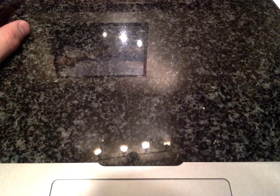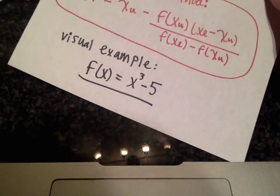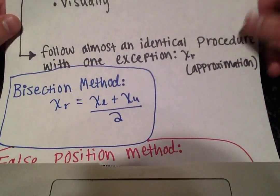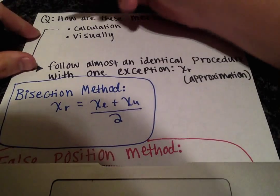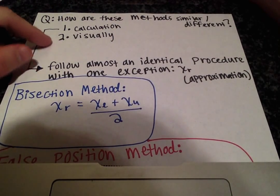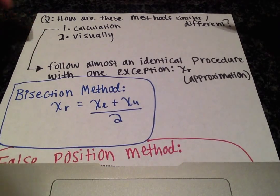So they are essentially the same in the sense that you're trying to find roots of an equation, but they're different in the approach. So there's two main differences I want to point out: there's the calculation that's different, and also when you're visualizing these two methods there's an important difference there.